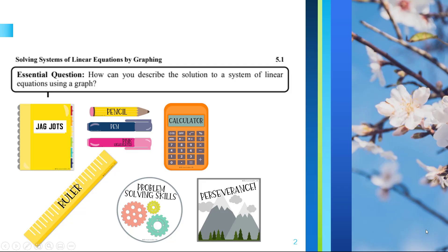Today you are going to need your Jaguar jots on section 5.1, a pencil or a pen, a highlighter may be useful, a calculator, a ruler is a definite must, problem solving skills and perseverance. You don't have a ruler, any kind of straight edge will be just fine.